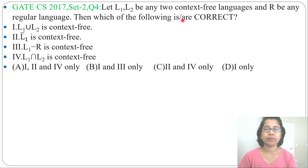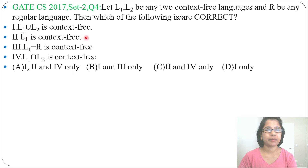Which of the following is correct? 1. L1 union L2 is context-free. 2. L1 complement is context-free. 3. L1 difference R is context-free. 4. L1 intersection L2 is context-free.